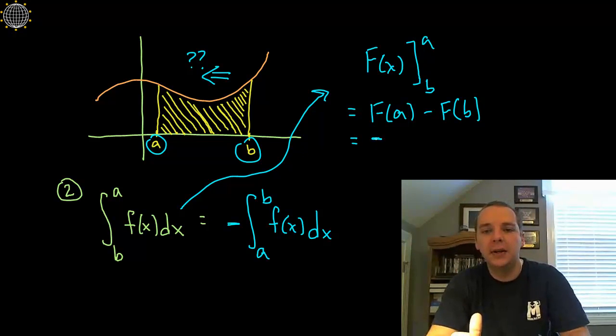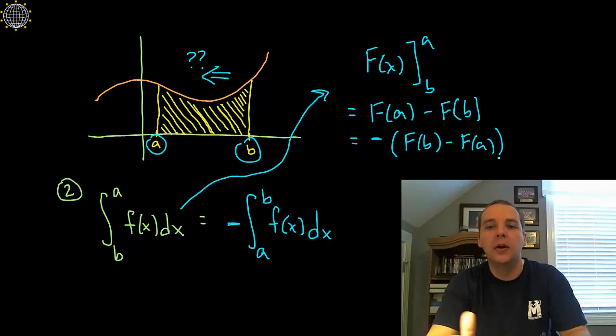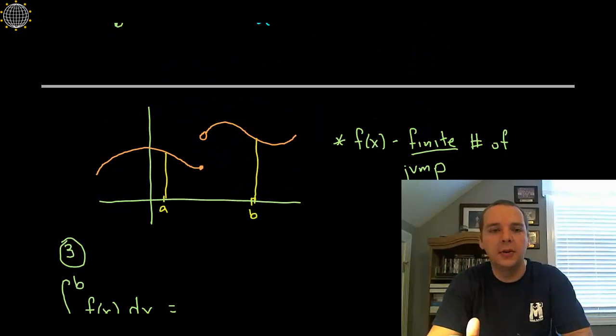So this being negative the quantity capital F of B minus capital F of A, which comes from the fundamental theorem of calculus, we see that it's the negative of just kind of your standard integral from A to B. All right, so that could save you a little time.